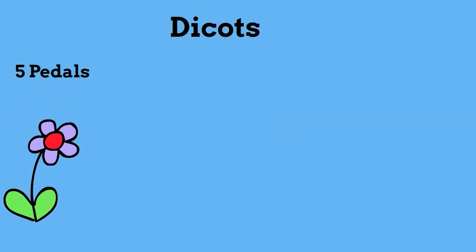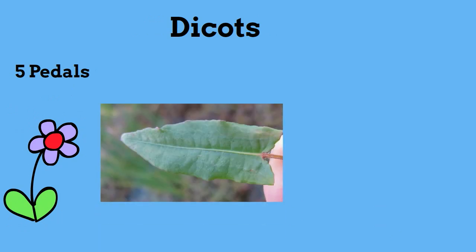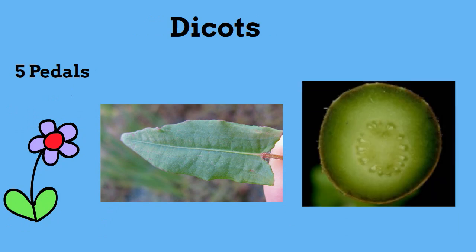In dicots, the flowers come often in 4 or 5 petals, or multiples of these numbers. The leaves are usually wide and the veins branch off from one another. If you look at the vascular tissue, you will see that it is arranged in a circle or ring.